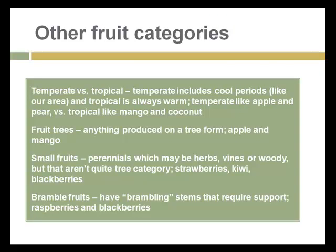Other fruit categories include temperate versus tropical, referring to tolerance of cool or cold temperatures. Fruiting trees include anything produced in tree form, such as apple or mango. Small fruits are perennials — maybe herbs, vines, or woody plants but not quite trees — examples include strawberries, kiwi fruit, blackberries, and grapes. Bramble fruits have canes or brambling stems that require support; blackberries and raspberries are examples. We will have a unit later in the course about fruit production, so I'm setting the stage for that important horticultural discipline.